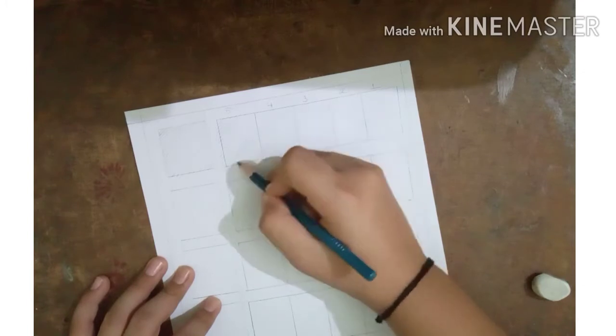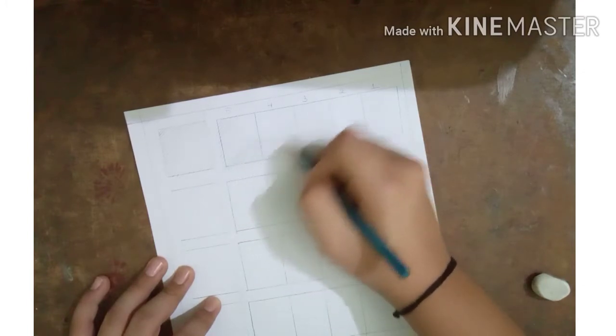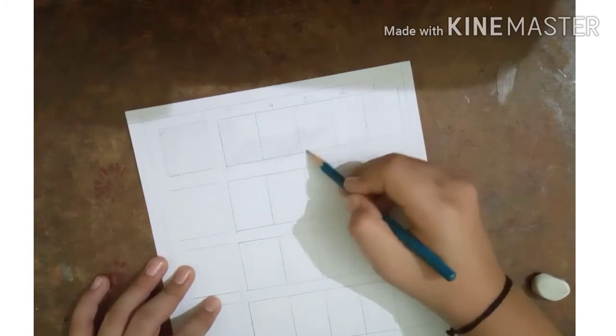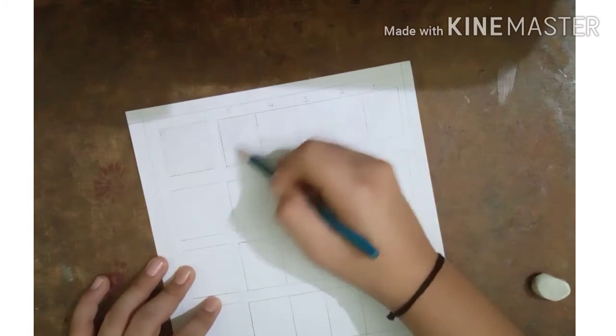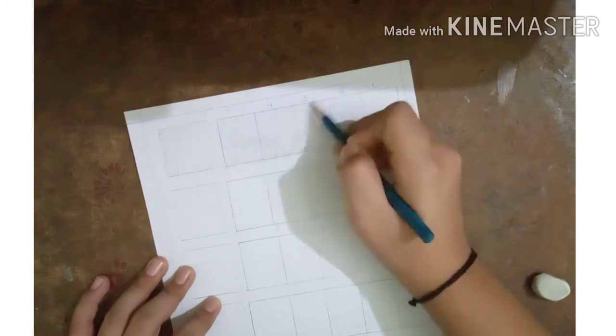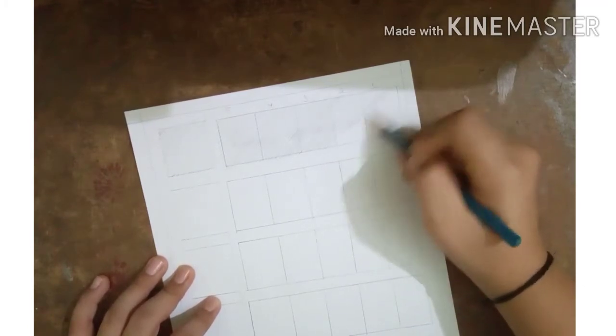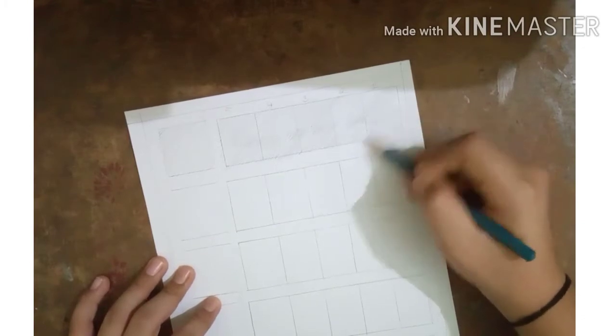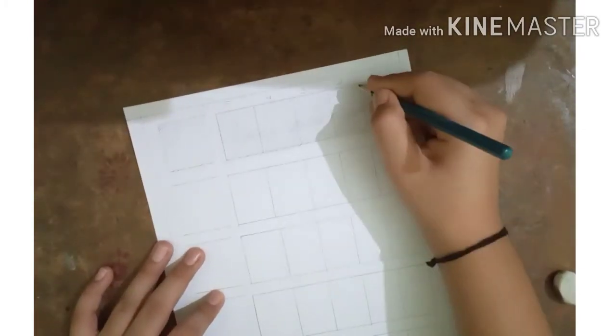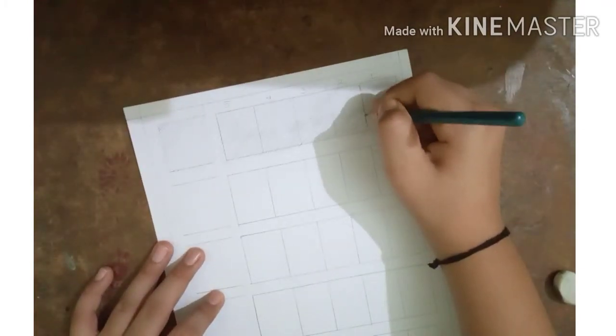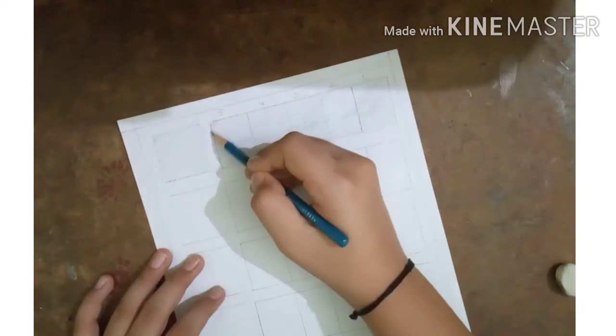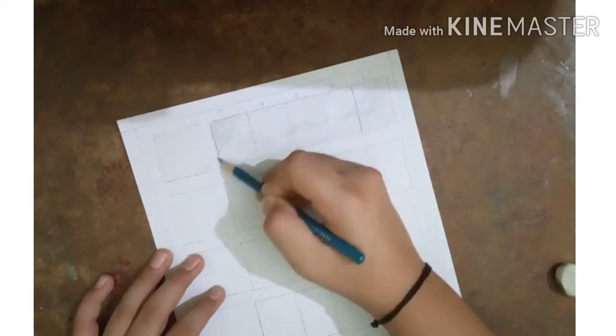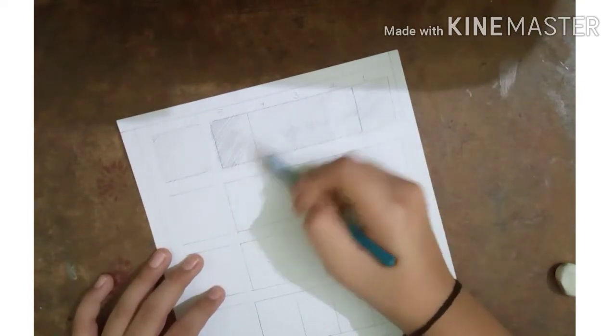Now start shading in these boxes. Remember to shade in all the boxes evenly. Now we have completed the first box.